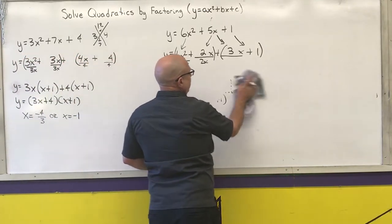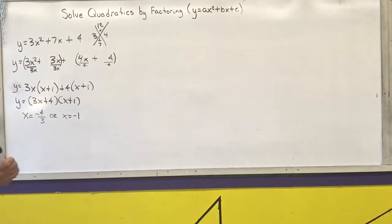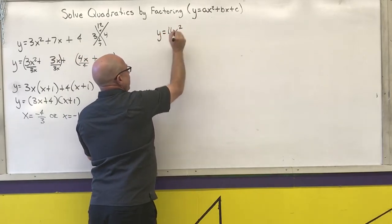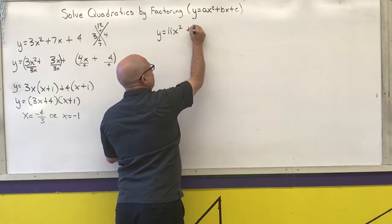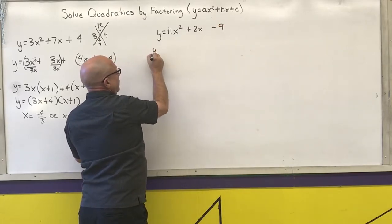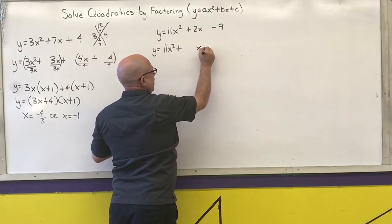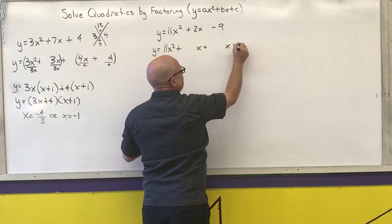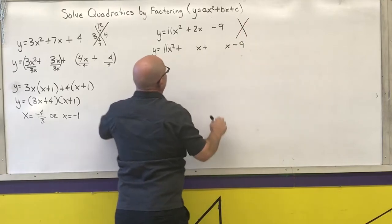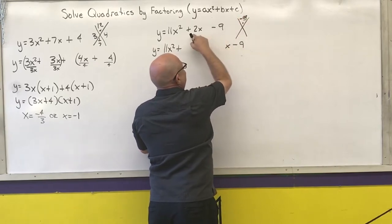The finding of the middle terms for the first three was fairly straightforward. This next one is going to be a little messier, but still solvable. y equals 11x squared plus 2x minus 9. I do my setup: 11x squared plus blank x plus blank x minus 9. I want two numbers that multiply to negative 99 that add to 2.